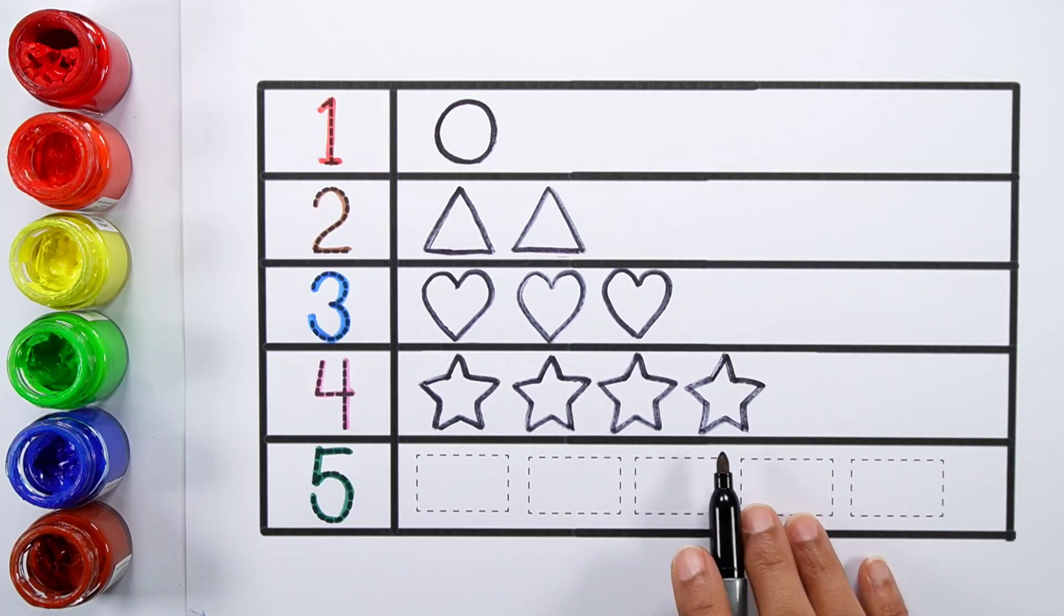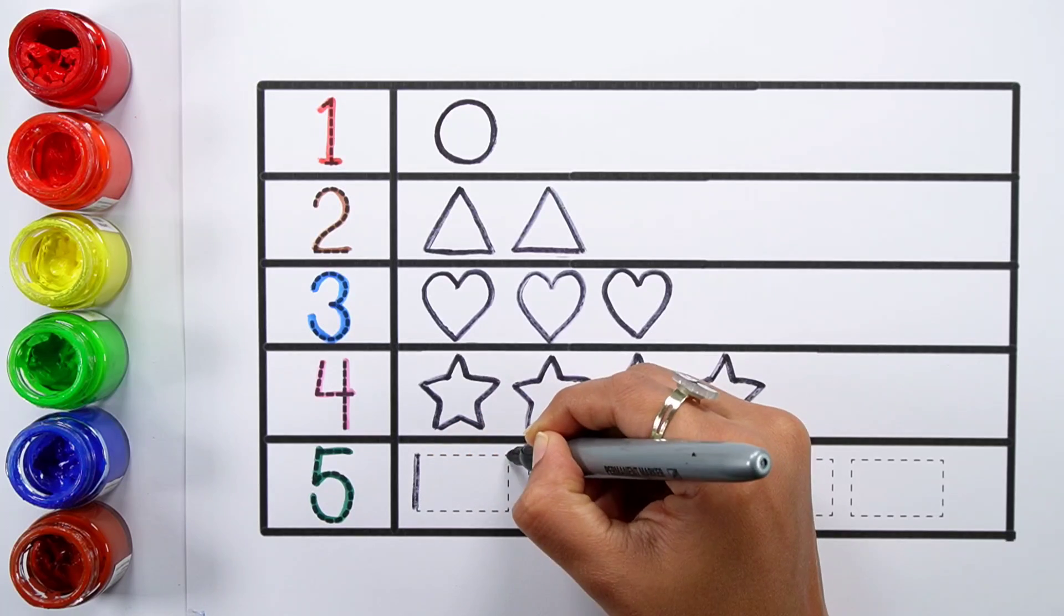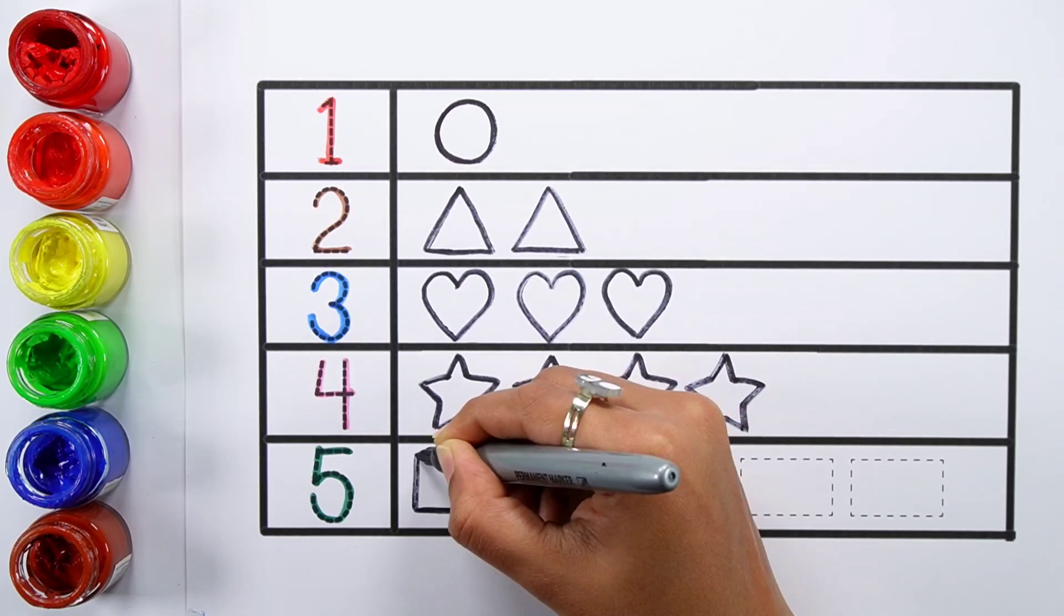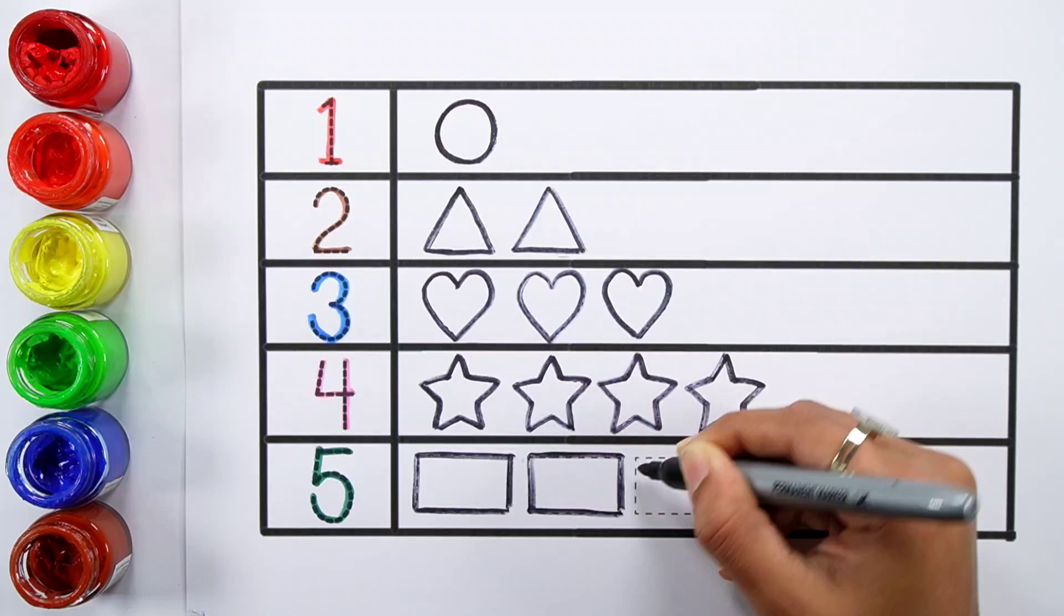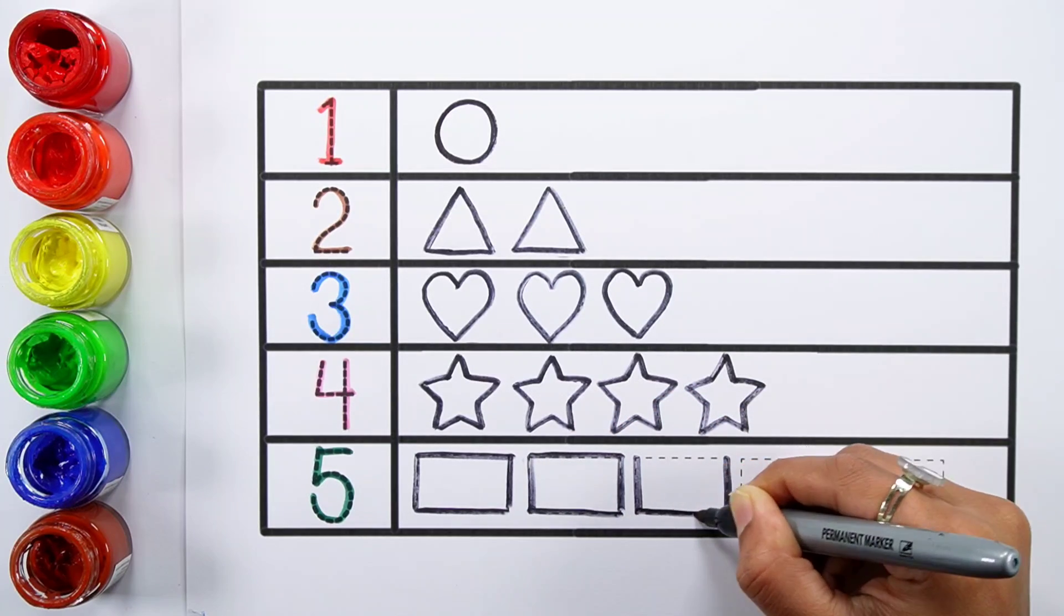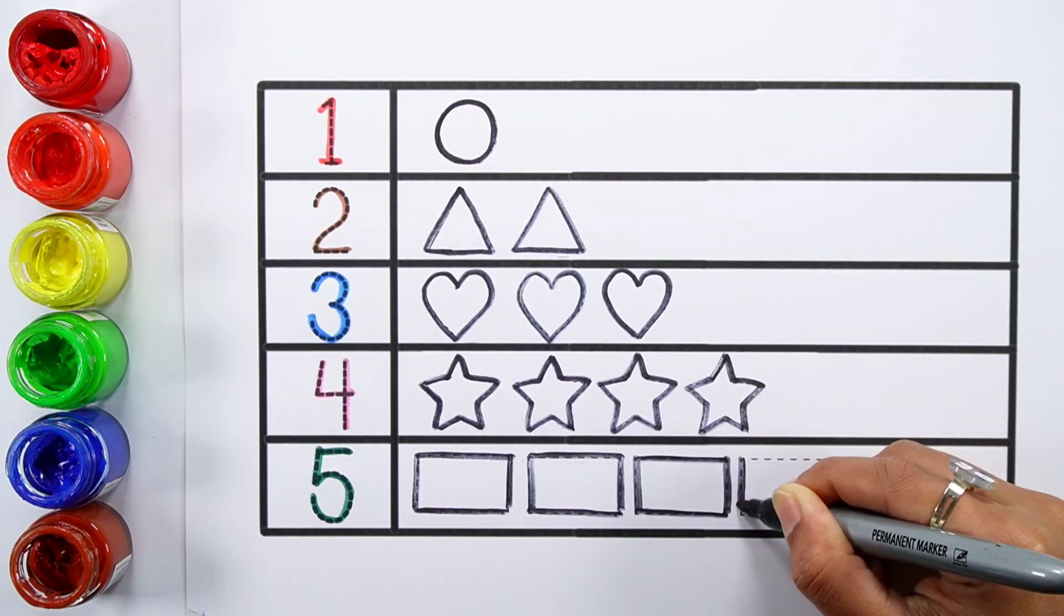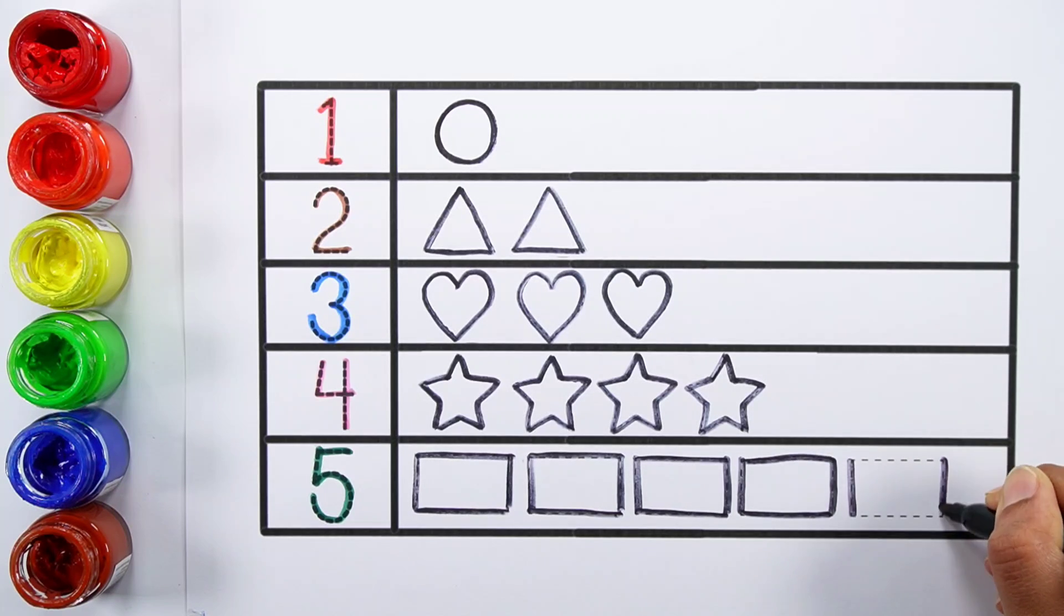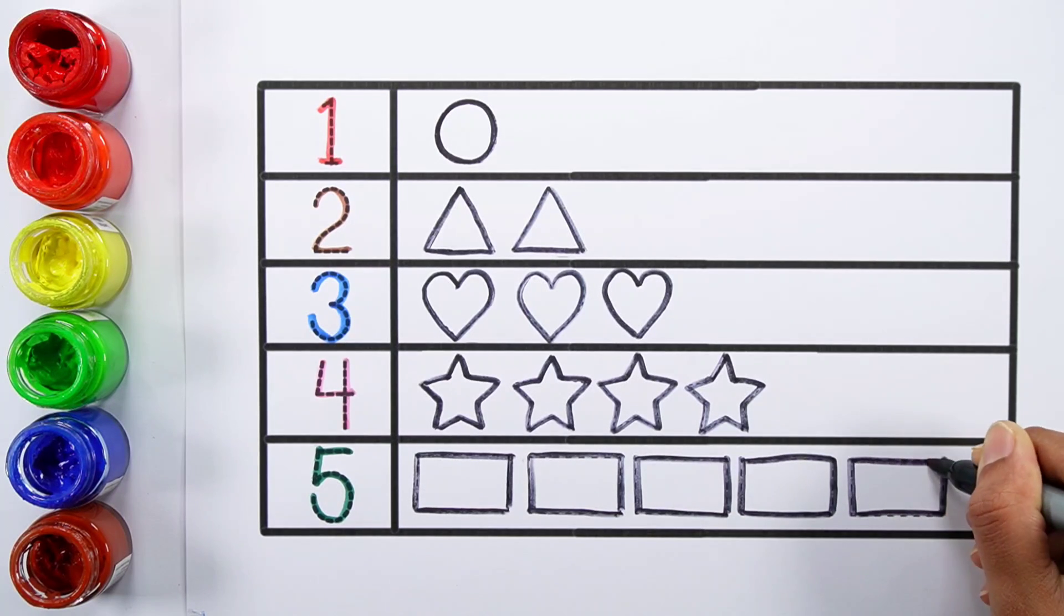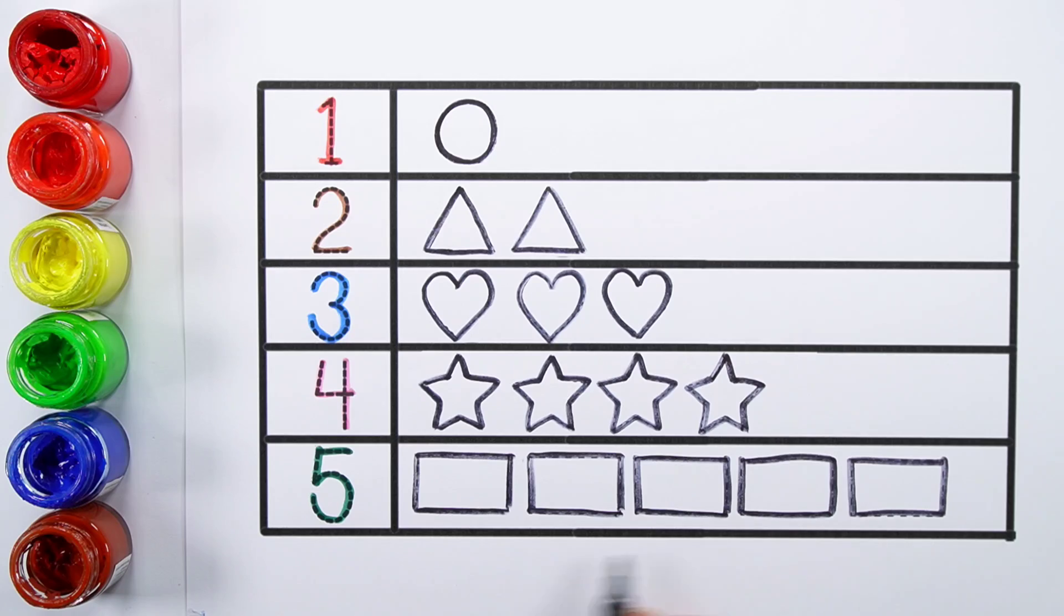One, two, three, four - four stars. One, two, three, four, five - five rectangles.